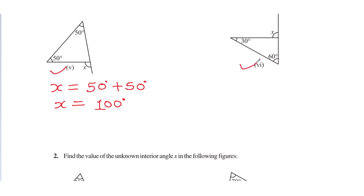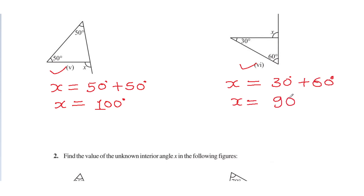Now, diagram number 6. What will the value of x be here? 30 degrees plus 60 degrees, so x is equal to 90 degrees. Because x is 90 degrees, the triangle is a right angle triangle, okay — because the exterior angle is 90 degrees, meaning the interior angle is also 90 degrees, so this triangle will be a right angle triangle.